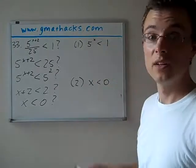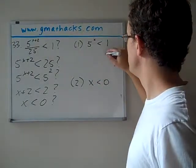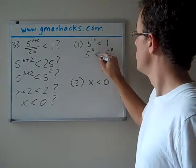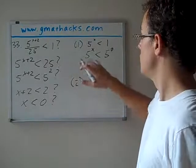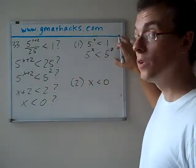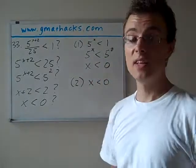So here, 1 is anything to the 0 power. So we can say 1 is the same as 5 to the 0 power. So 5 to the x is less than 5 to the 0. Again, as we did, as we were working through the question, we can get rid of the bases. So this is the same as x is less than 0.